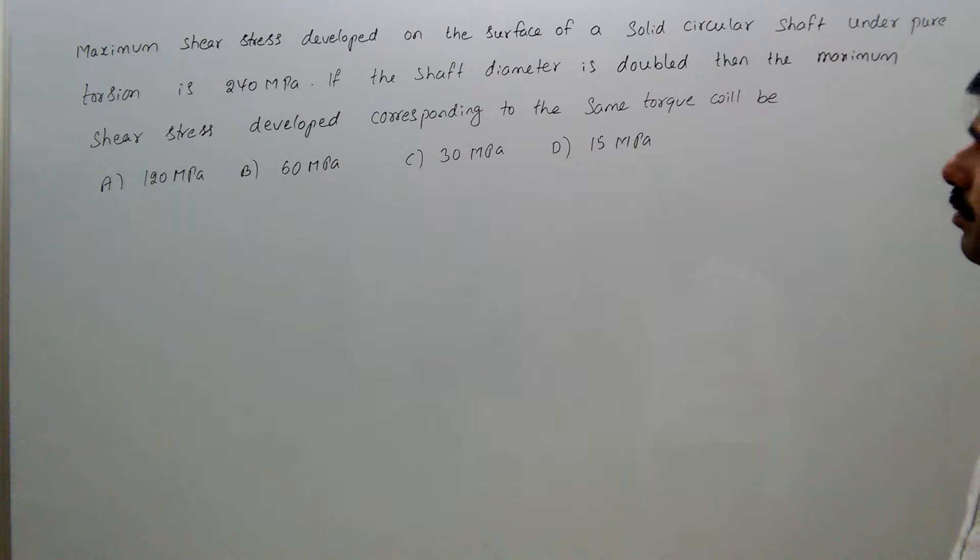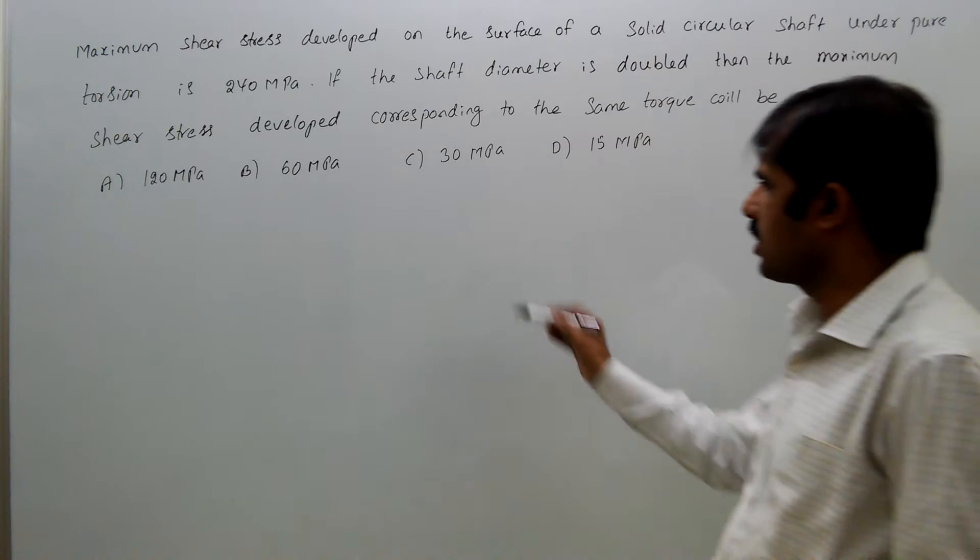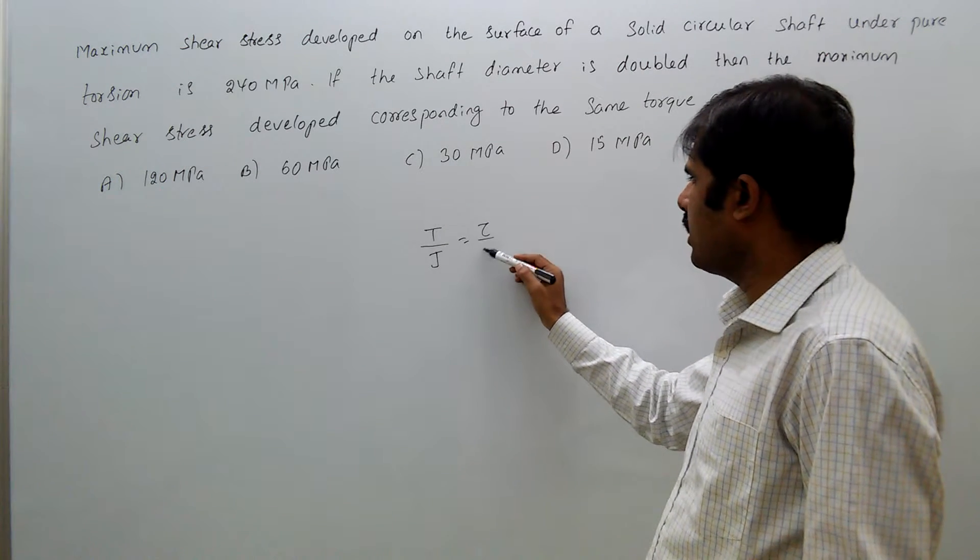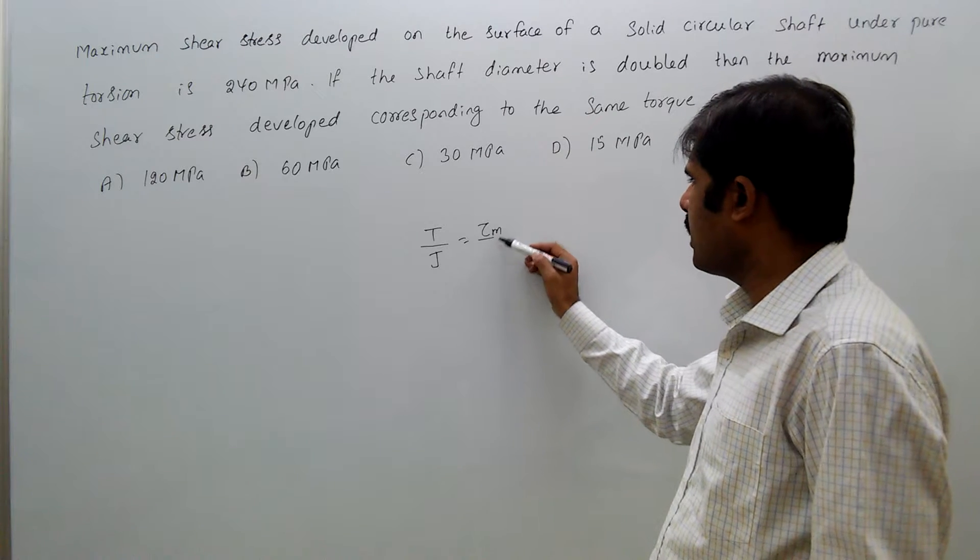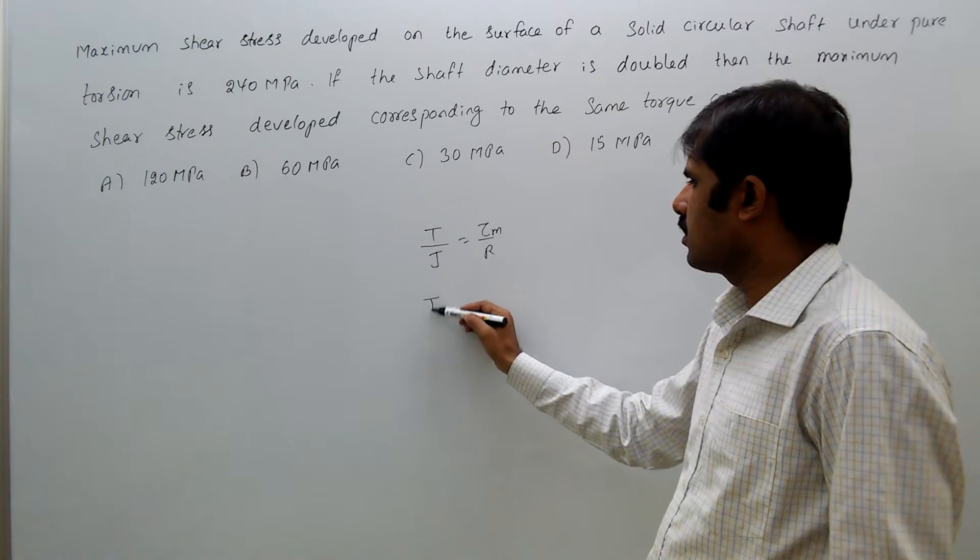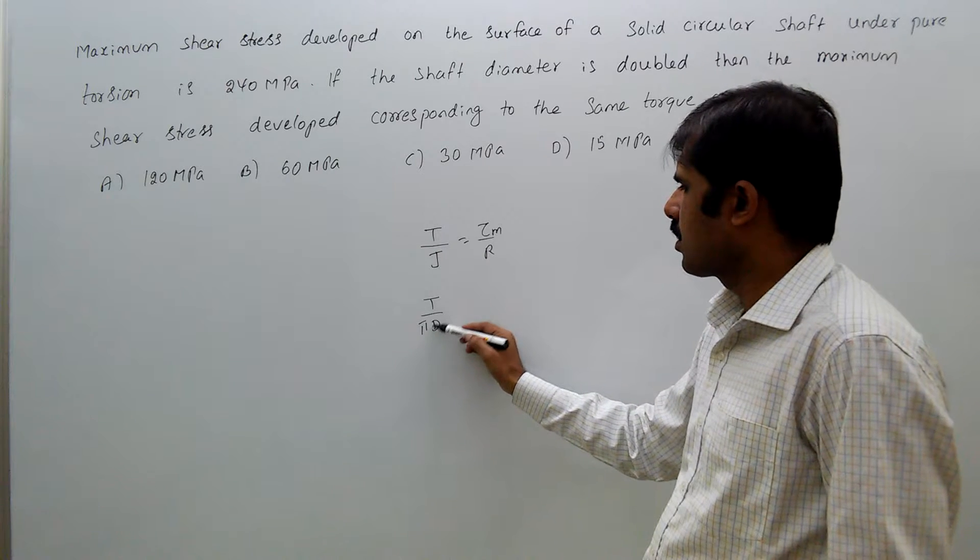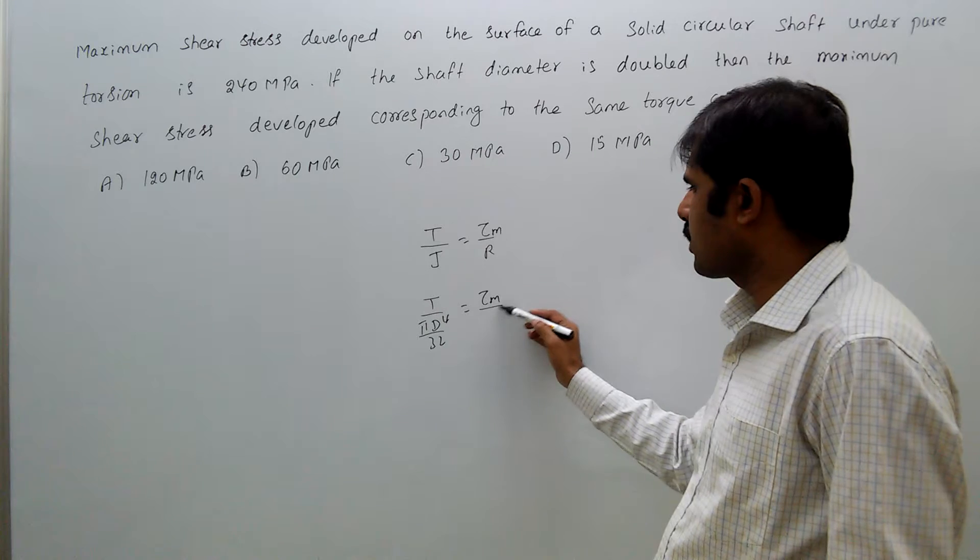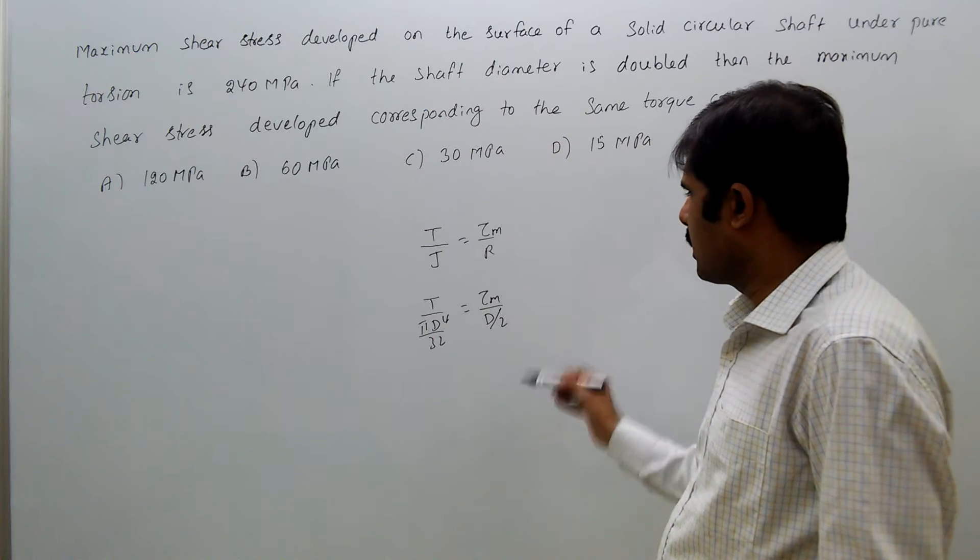What is the relation for shear stress and diameter? We see t by j equal to tau max by r, that is, t by pi d power 4 by 32 equal to tau max by d by 2.